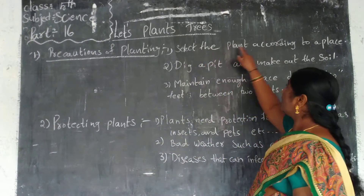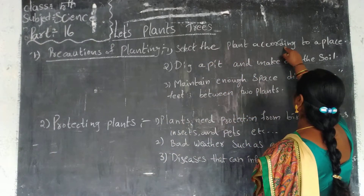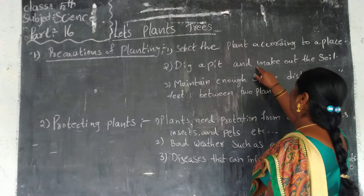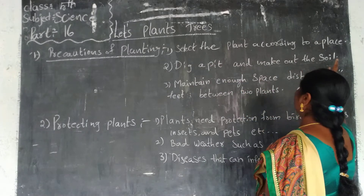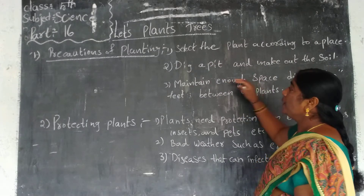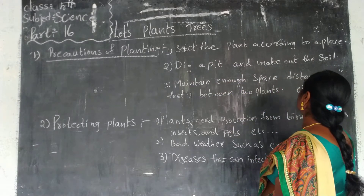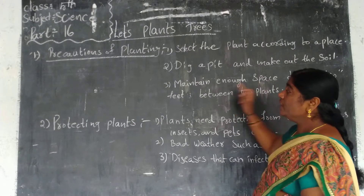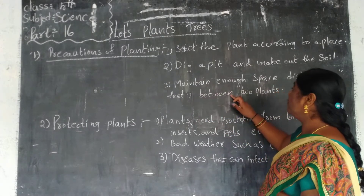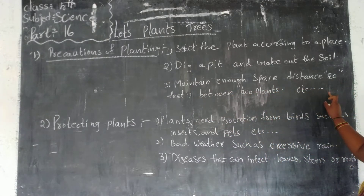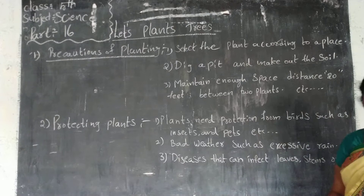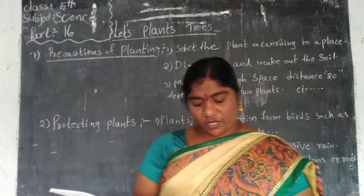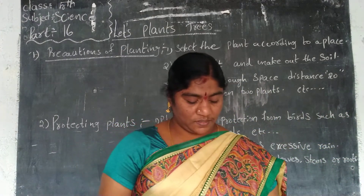Select the plant according to the place. Make a pit and take out the soil. Maintain enough space — a distance of 20 feet between two plants. Now let us learn about the precautions for planting.